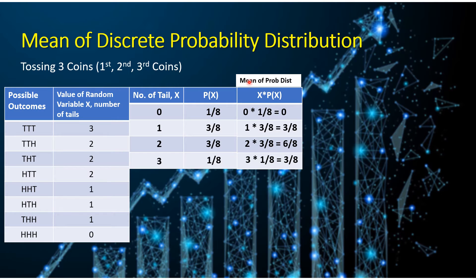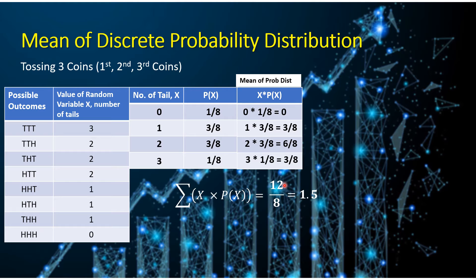The formula to get the mean of our probability distribution is simply getting the sum of all the products of x times P(x). So, 0 plus 3 over 8 plus 6 over 8 plus another 3 over 8 — the sum will be equal to 12 over 8, which is equal to 1.5. This is the mean of our probability distribution.